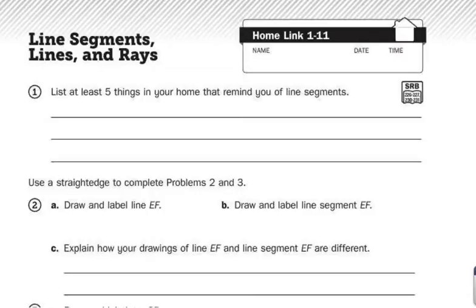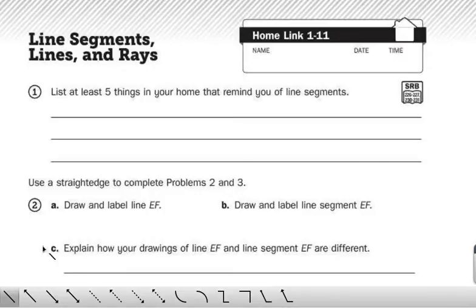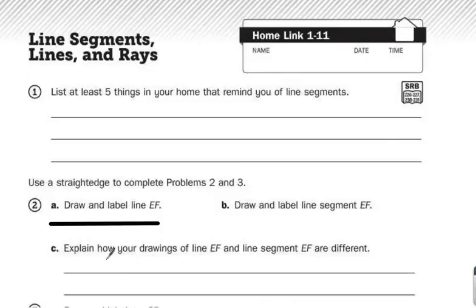So a line goes on forever in each direction. A line cannot be measured. So to represent that, I'm going to put arrows on each end of this line to show that this line doesn't have a beginning or an end. It goes on forever in both directions. It can't be measured. Now I have to label it. So I'm going to put point E here and point F here. Line EF.